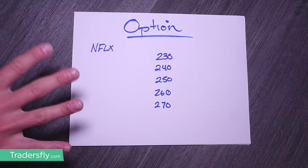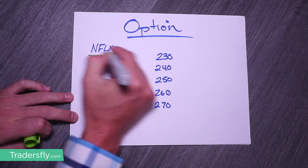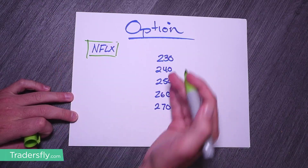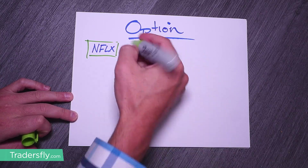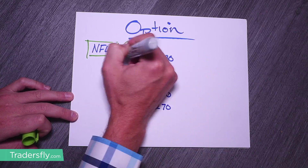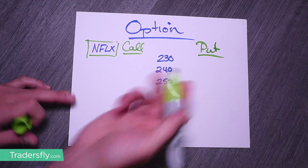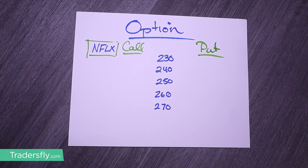When you look at an option — let's check out Netflix as our ticker symbol — there are probably a lot of different strikes that you've seen. On one side will be the call side, and this will be the put side. The question comes down to: which strike price do I choose? Because you have calls and you have puts and you've got to figure out a strike price.